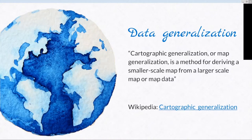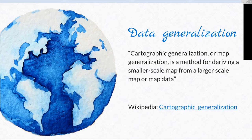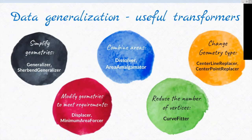We showed how we can enrich data to make decisions for generalization. Generalization is an important step when making maps — you might need to cover a bigger area at a smaller scale and don't need as much detail. For example, at 1:100,000 you don't need all buildings, or you can simplify shapes because you can't show all vertices. Useful transformers include generalizers to simplify geometries, the dissolver and amalgamator to combine areas, and center line replacer or center point replacer to change geometry types.